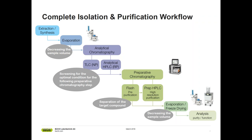This step is needed to find the optimal condition, which is related to the stationary and mobile phase, and that is crucial to know for the following upscaling procedure to preparative chromatography. In this preparative step, the target compound gets purified in high quantities, either by flash chromatography or prep HPLC, or usually both together. In that case, flash is used for pre-purification and prep HPLC for the final high-resolution step.